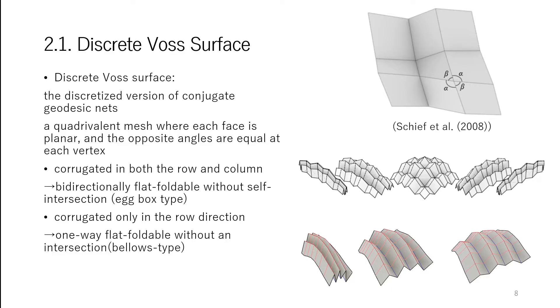Similarly, when the surfaces are corrugated only in the row direction, we obtain surfaces that are often one-way flat foldable without intersection.